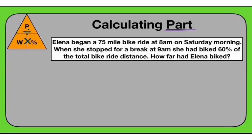Alana began a 75-mile bike ride at 8 a.m. on Saturday morning. When she stopped for a break at 9 a.m., she had biked 60% of the total bike ride distance. How far had Alana biked? So what information do we have? The whole distance of the bike ride is 75 miles, and she biked 60% of the whole distance — so we also have the percent. What we don't have is the part — that's what we're solving for.